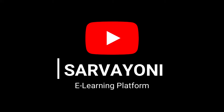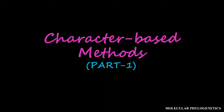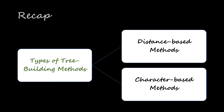Hello everyone, welcome back to our channel. You are watching the series on molecular phylogenetics. In this video we are going to talk about character-based methods, Part 1. There is another part to this topic and then we will have our final video in molecular phylogenetics. Let's have a recap: we discussed that there are two types of tree building methods — distance-based methods and character-based methods.